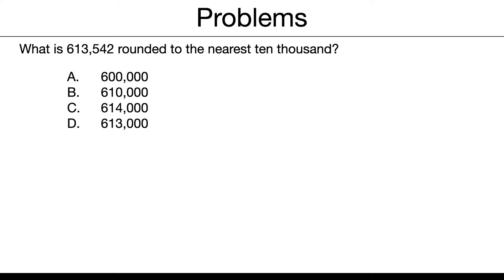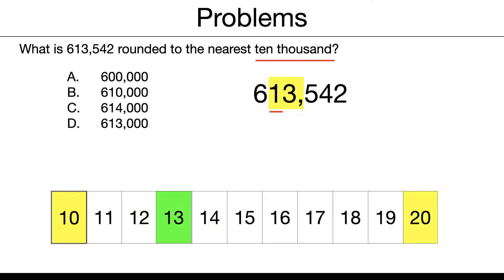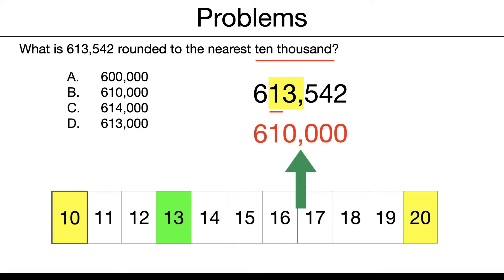Let's solve some problems. What is 613,542 rounded to the nearest 10,000? First thing, we'll just rewrite our number so we can work with it. We're going to underline the place value — they're telling us 10,000, so make sure you get this step right. Underline the one, then box it. The 13 is going to round to 10 — on our rounding chart, 13 is closest to 10, so that pops into a 10. Left stays the same, and the right pops into zeros. So our answer is 610,000.